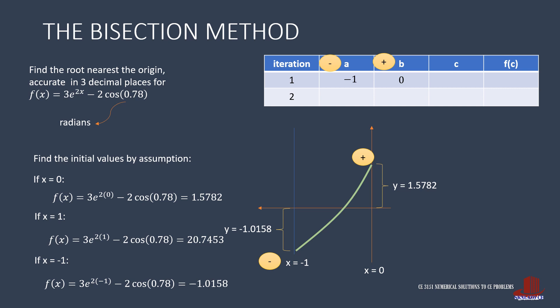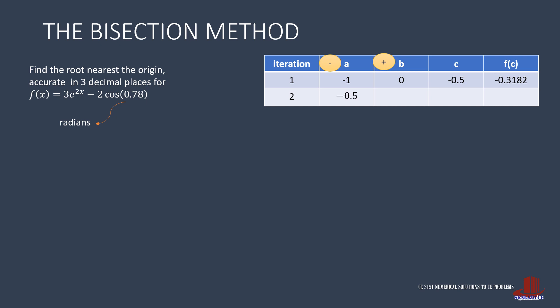For the first iteration, c is the average of -1 and 0, giving c = -0.5. Plugging this into the function, f(c) = -0.3182. The negative sign of f(c) means c replaces a. Now a becomes -0.5 and b remains 0. The new c is half of (-0.5 + 0) = -0.25.